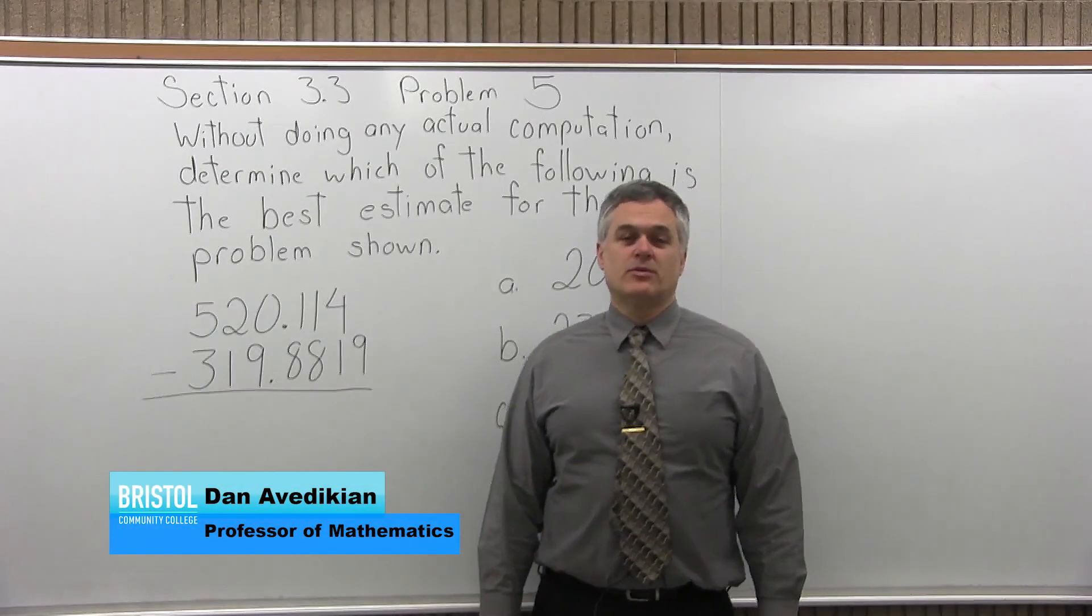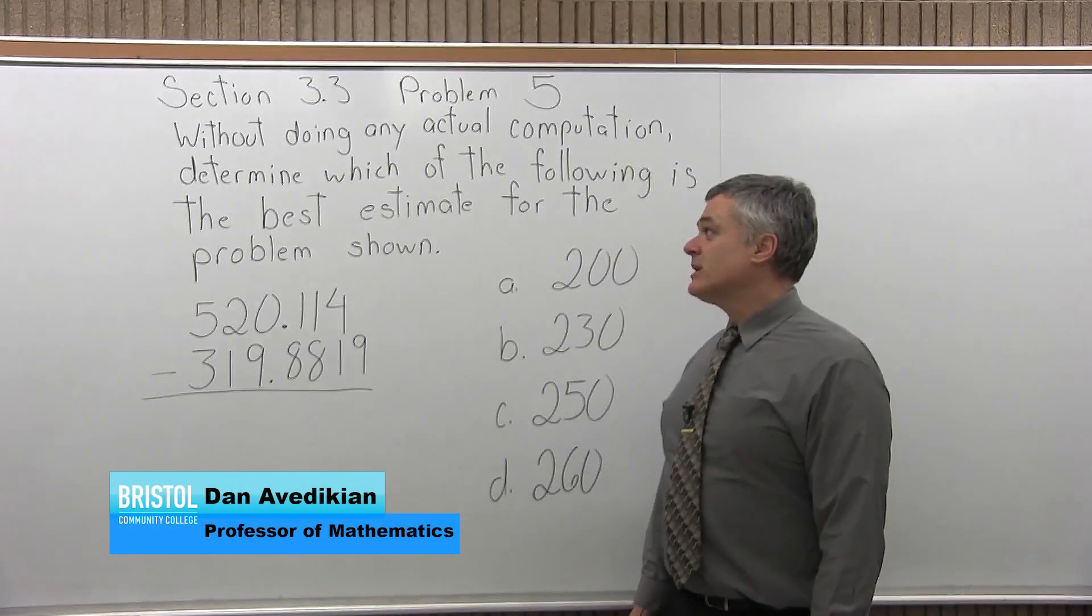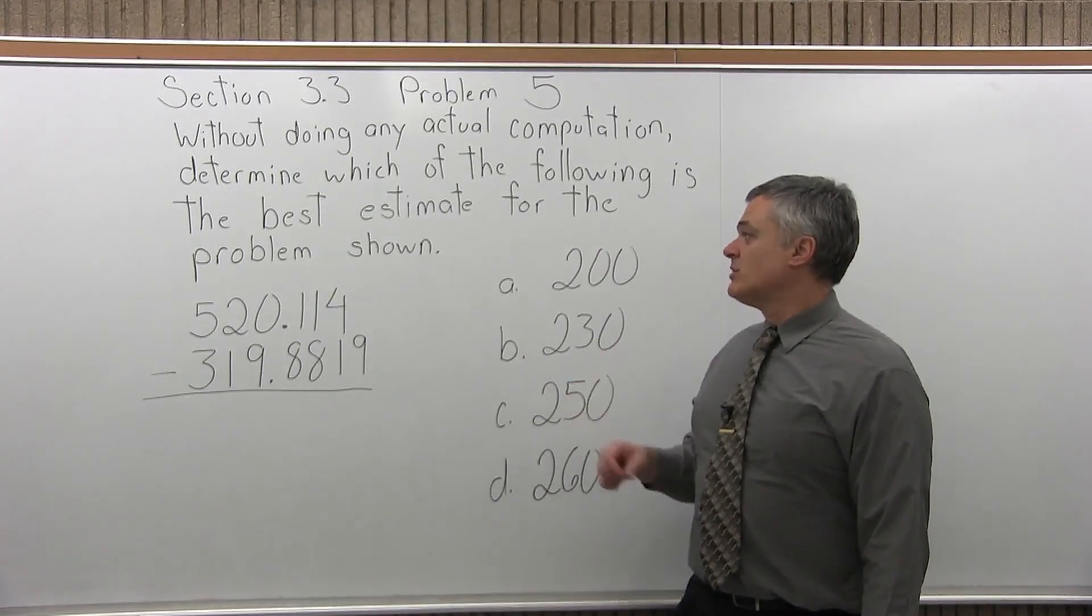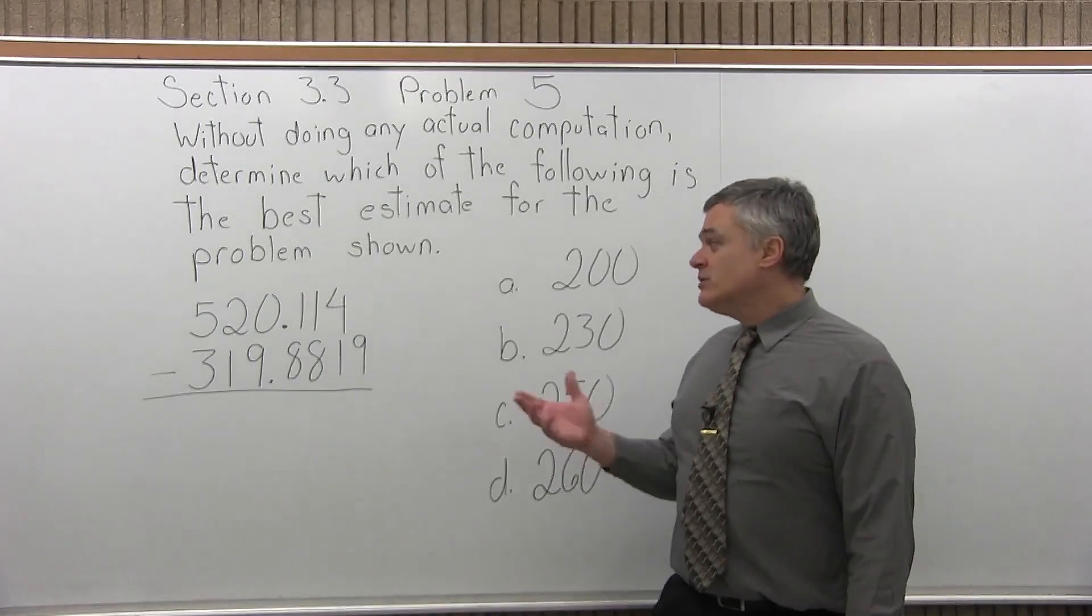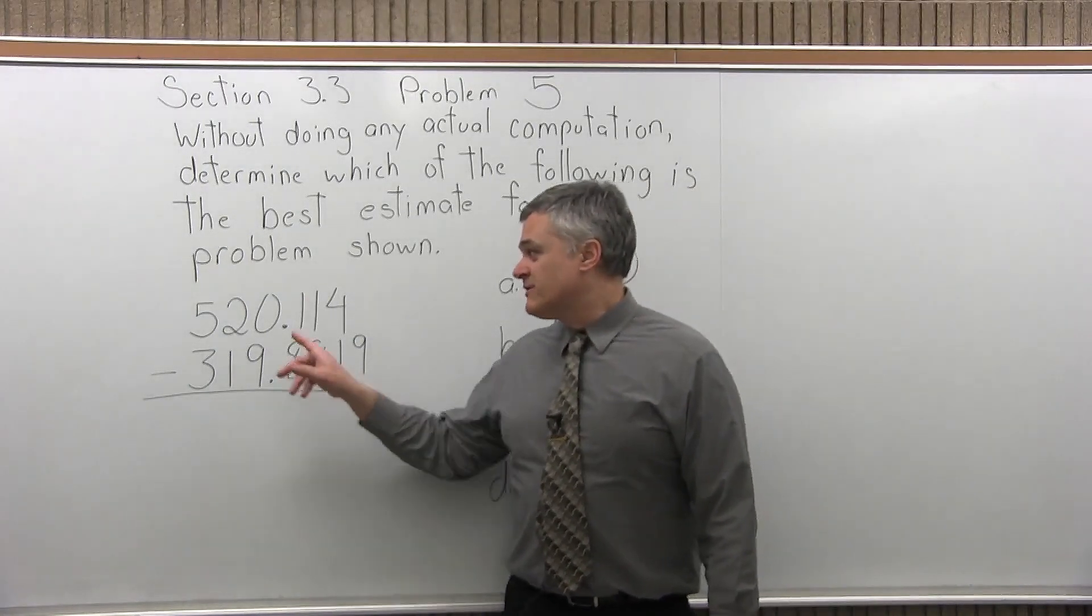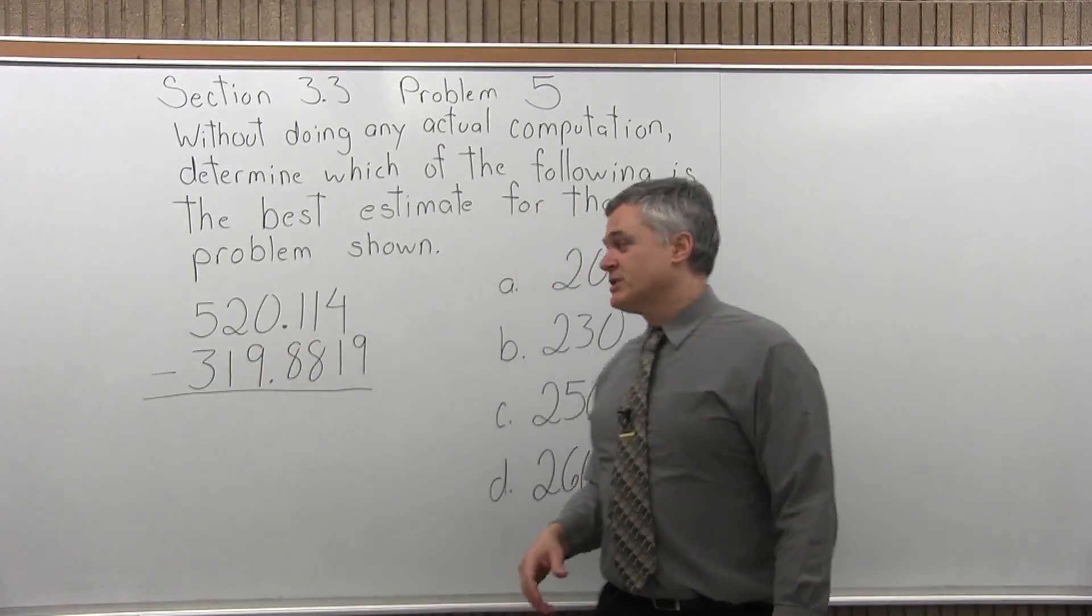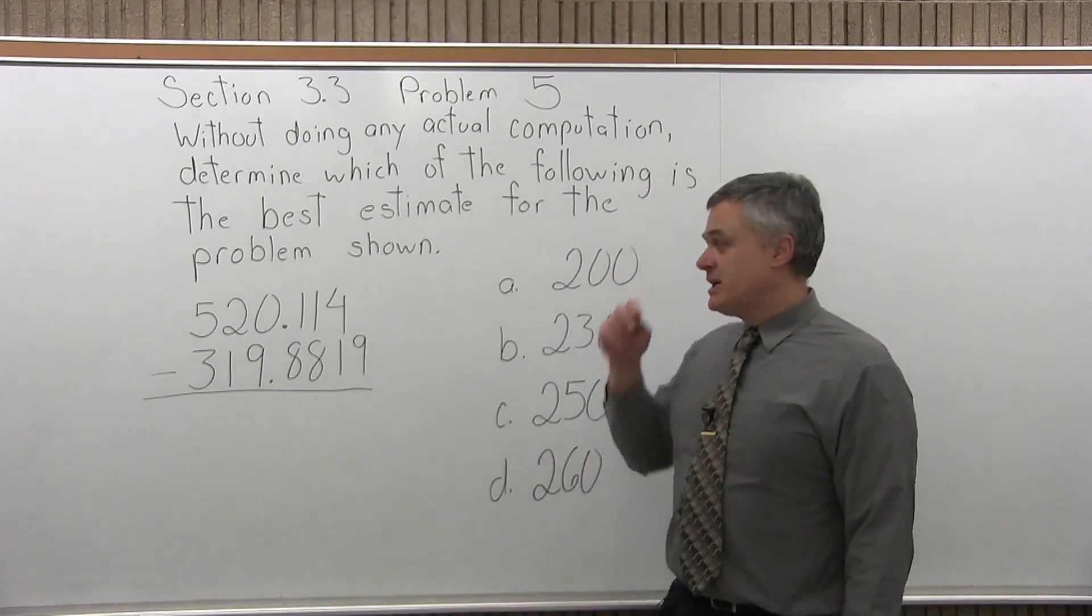This is Section 3.3, Problem 5. It says, without doing any actual computation, determine which of the following is the best estimate for the problem shown. So we have two fairly big numbers with some decimals: 520 point something minus 319 point something. So we need to estimate which one of the options is best.